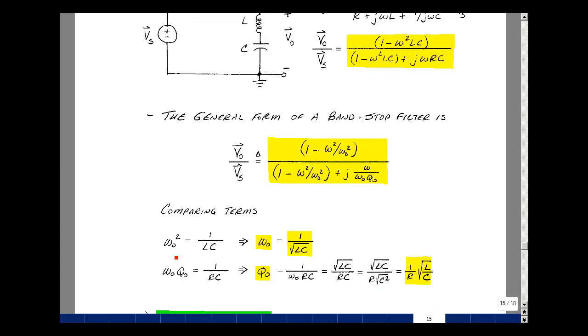So I'm going to solve for ωₙ and for Qₙ. But our denominator is the same as it was for the band pass filter. And we actually get the same results. We get that ωₙ is 1 over the square root of LC, and the Qₙ is 1 over R square root of L over C.